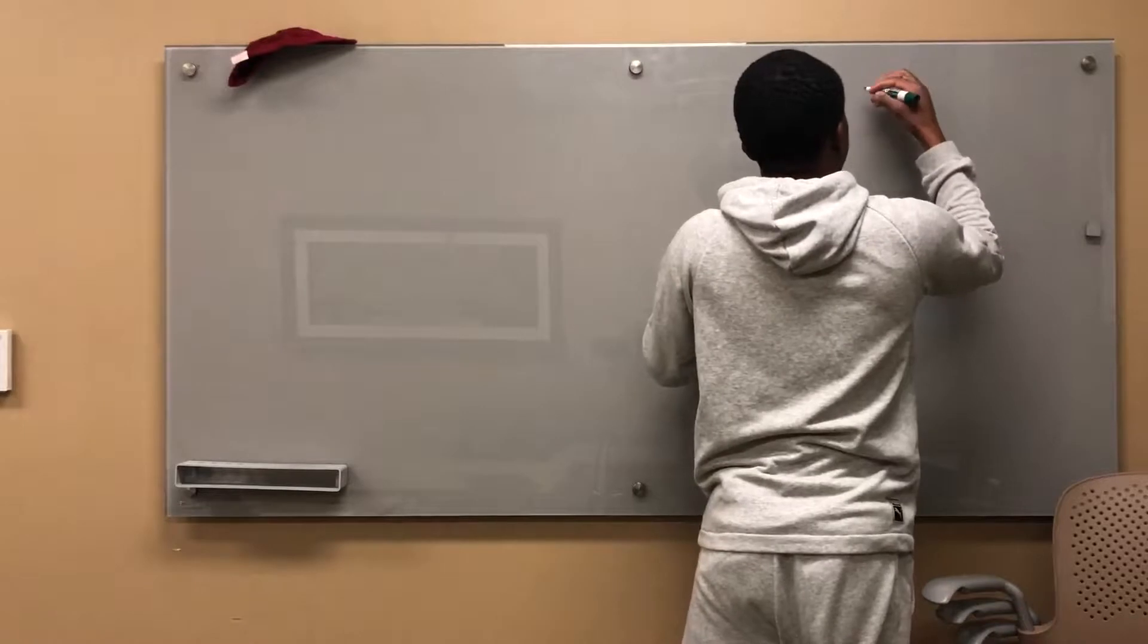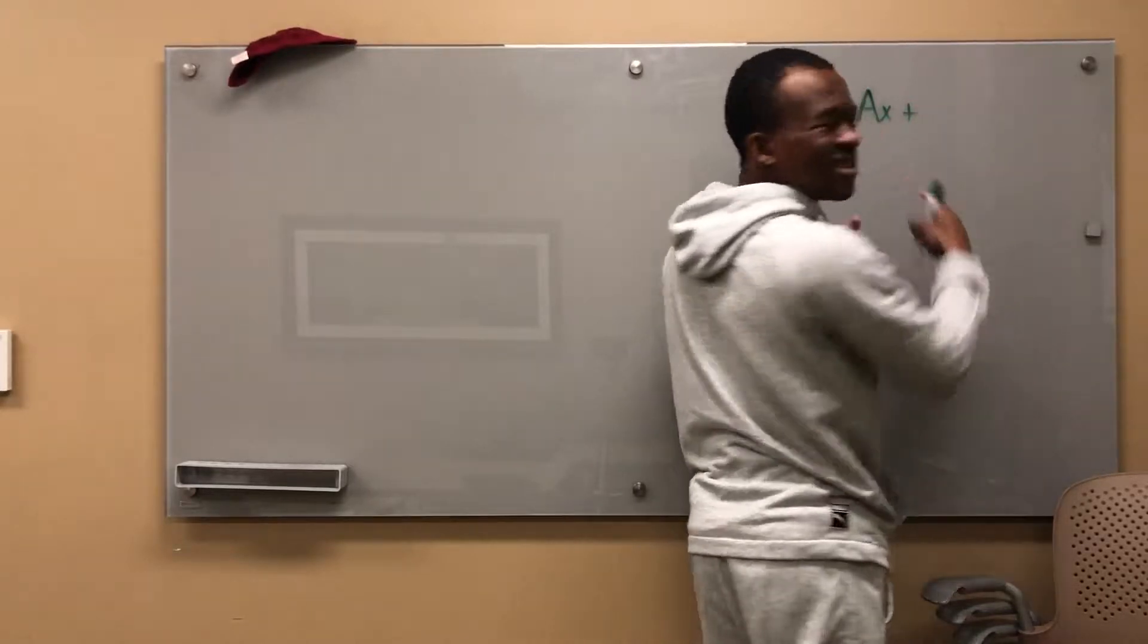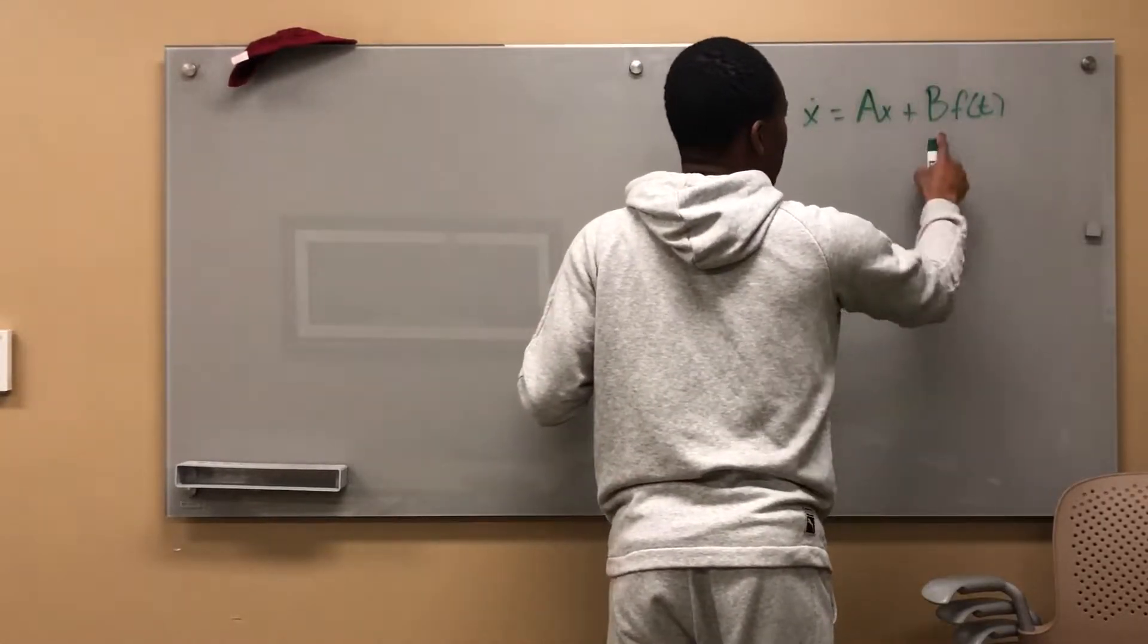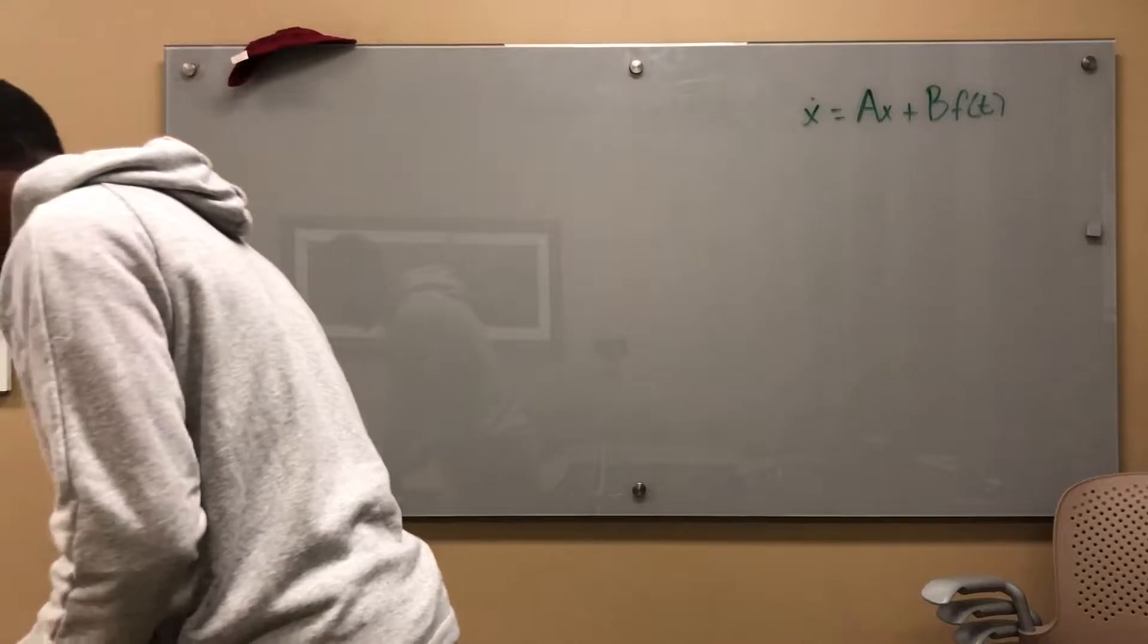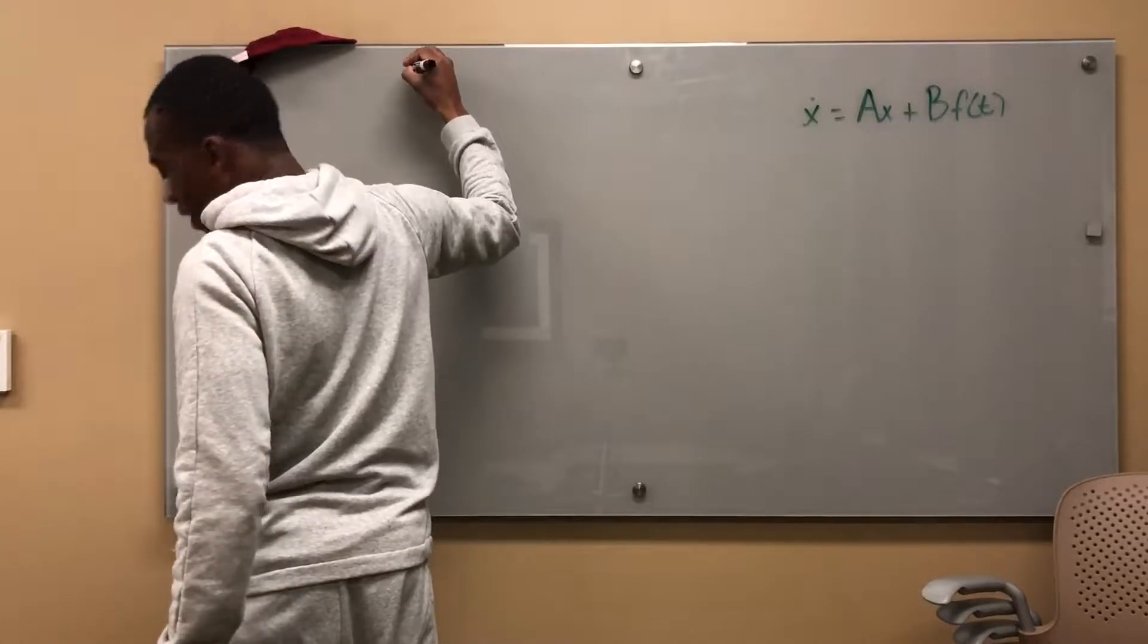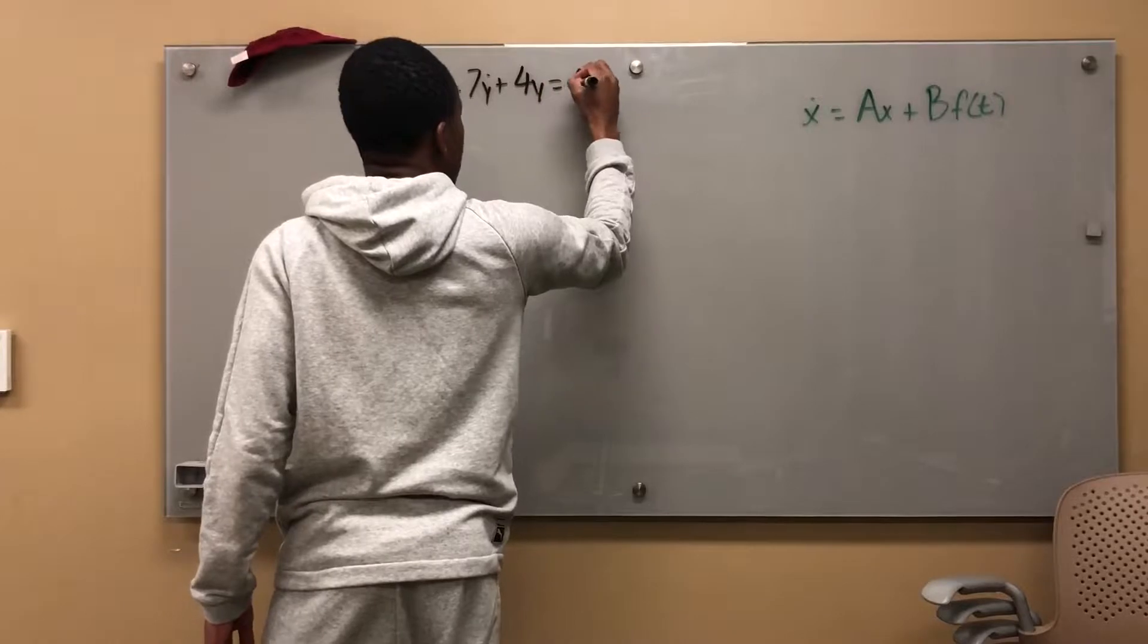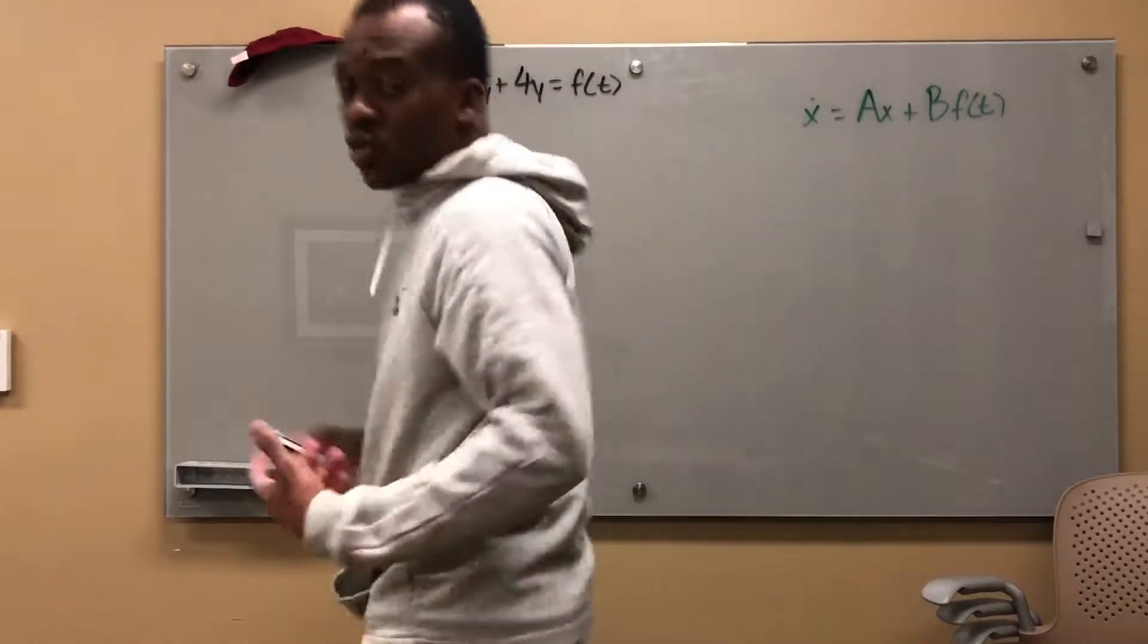So we have x_dot = Ax + Bu, or you can say B times f(t). This is a vector, this is a vector, and in a lot of cases this is a vector too. In this example that we're going to do, it's not really going to be a vector. The example says 5y'' + 7y' + 4y = f(t), and what we're trying to do is get this into this form.